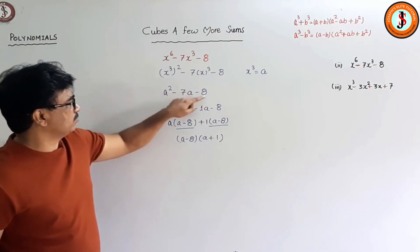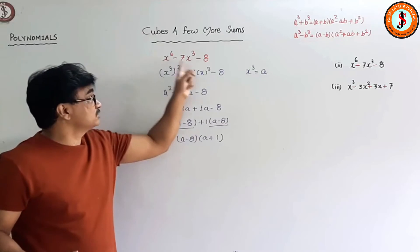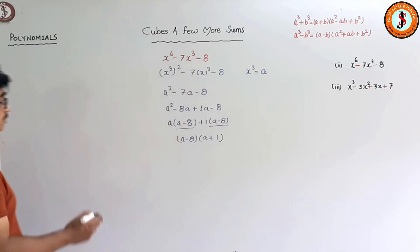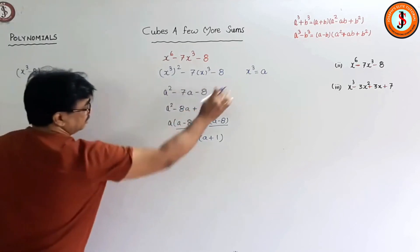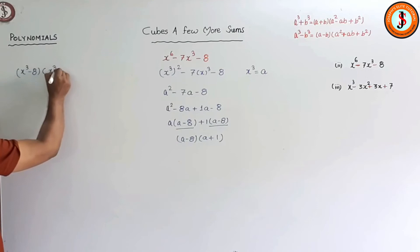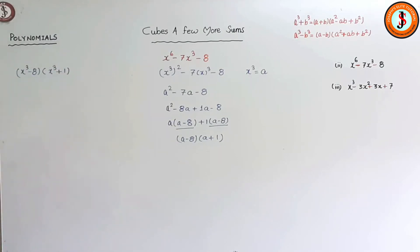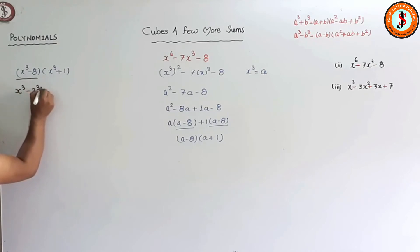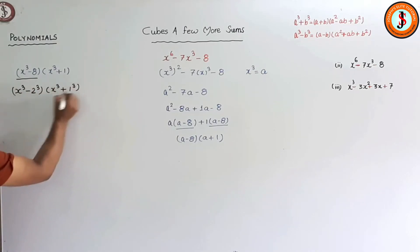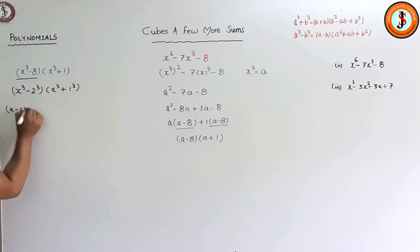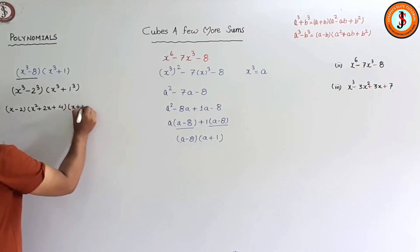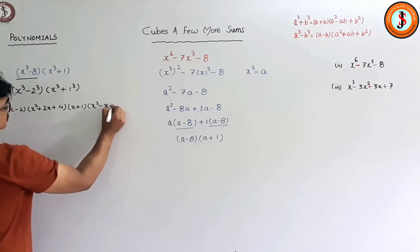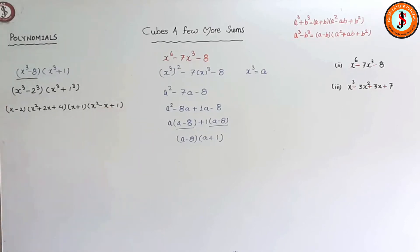Now I took x³ as a, so substituting back: (a - 8) becomes (x³ - 8) and (a + 1) becomes (x³ + 1). These can be further factorized. x³ - 8 is x³ - 2³, and x³ + 1 is x³ + 1³. Expanding: (x - 2)(x² + 2x + 4) and (x + 1)(x² - x + 1). That is the complete factorization.